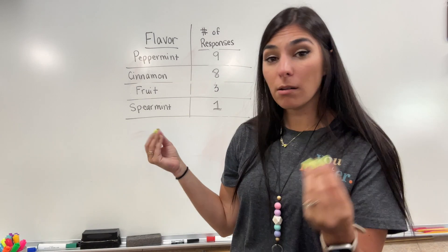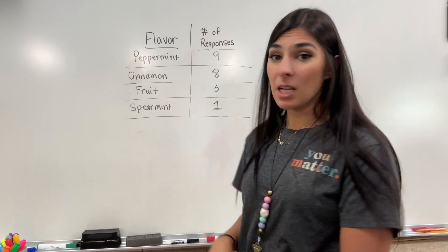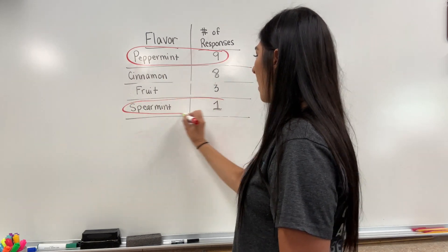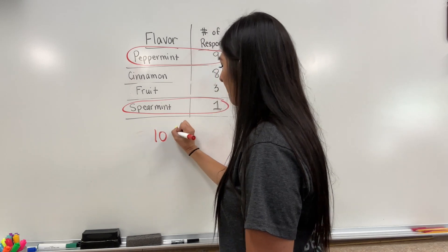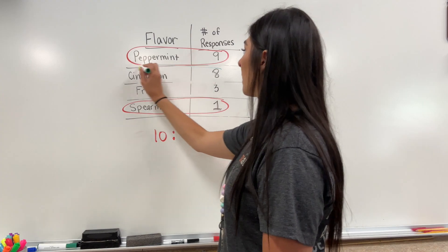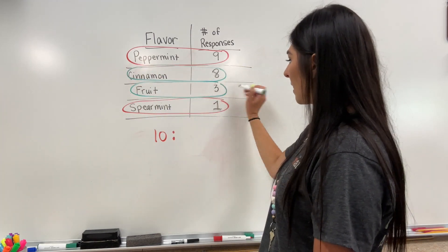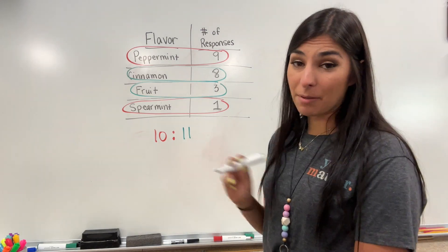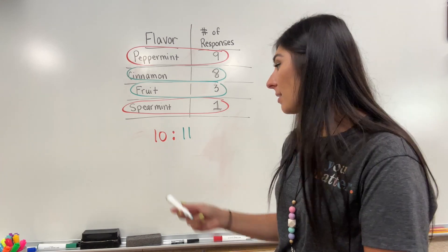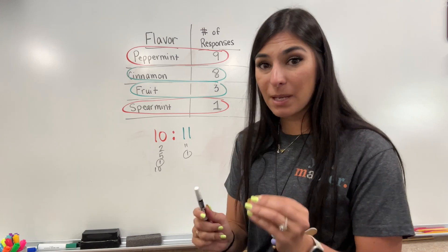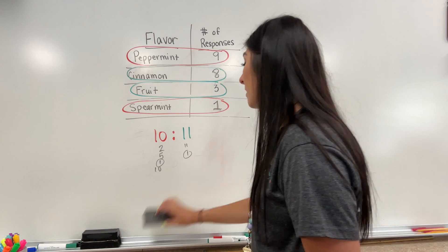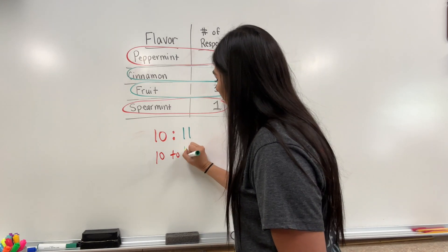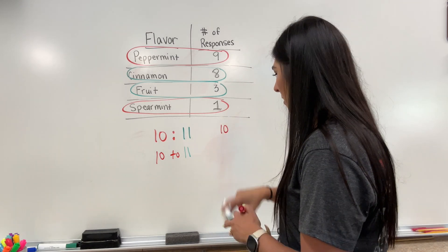Now using the same chart, let's compare more values. Let's say I want to compare the students who preferred mint gum — peppermint and spearmint — to students that did not like mint gum. I would go ahead and combine my peppermint and spearmint: nine plus one gives me 10. Students who did not like mint would be cinnamon and fruit: eight plus three is 11. So for every 10 students who preferred mint gum, there were 11 that did not prefer mint gum. Can I simplify this? No, because there are no factors that they have in common. So don't be afraid just because you see bigger numbers that they need to be simplified — sometimes they just can't. Our ratio is just 10 to 11, which I can also write as 10 to 11 in word form, or in fraction form, 10 over 11.